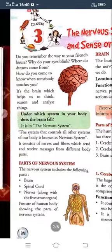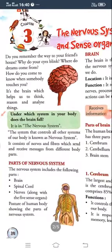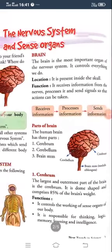In our earlier video I have already discussed with you what do you understand by the nervous system. Parts of the nervous system — there are three parts: one is brain, another one is spinal cord, and the third one is nerve. The brain is the most important organ of the nervous system, controls everything. It is located inside the skull and its function is to receive information from the nerves and send signals so that action can be taken. The brain's work is to receive information, process information, and then send information.